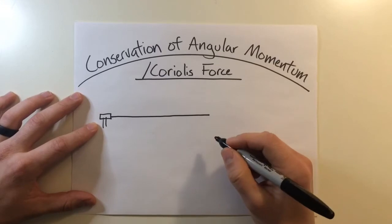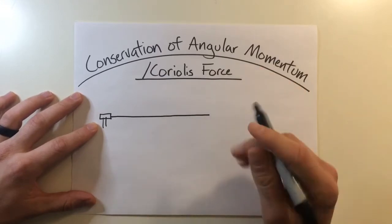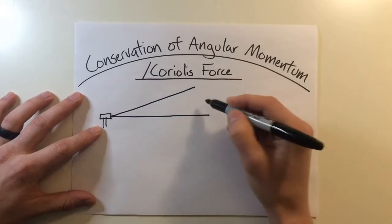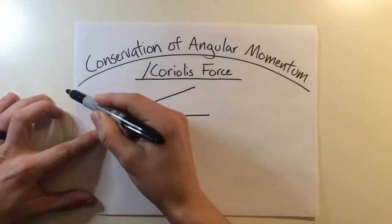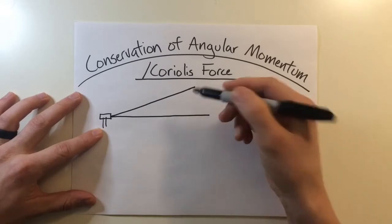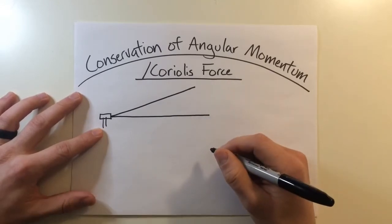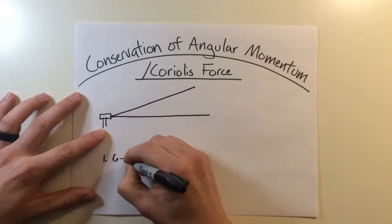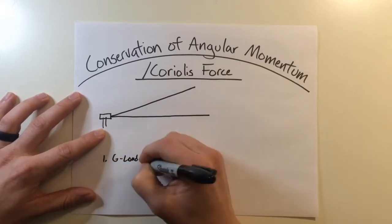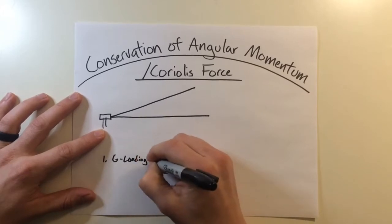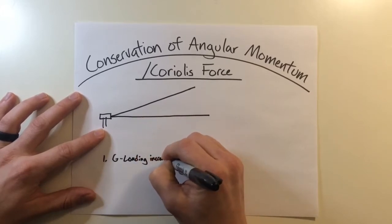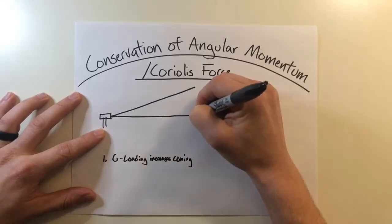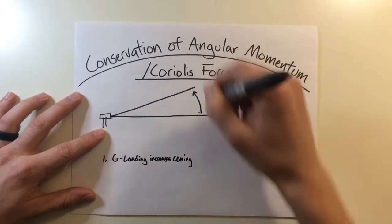But as you increase the g-loading, your rotor system is going to start to cone. So what does that mean? The coning angle is going to start to form and it's going to look something like this. Obviously, it's on this side as well, but for simplicity, just drawing it on one side. So the steps for this, the very first thing you're going to experience for conservation of angular momentum, this g-loading is going to start increasing your coning. And that's just this motion right here as it starts to cone up.